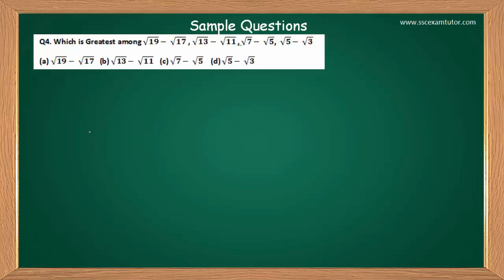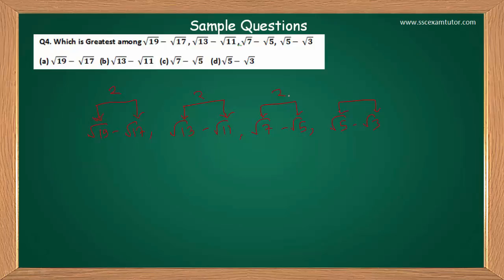The last question is a bit different. In all previous questions the numbers inside the roots gave the same sum when added. But in this case, the numbers give the same result when subtracted: 19−17=2, 13−11=2, 7−5=2, and 5−3=2. Before applying this trick, make sure that either adding or subtracting the numbers of the root gives the same number. If that is not the case, please don't apply this trick.